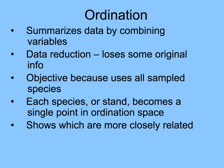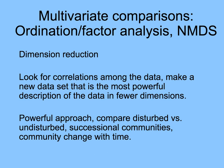Ordination shows which communities are most similar to each other. There are other multivariate comparisons as well — ordination is sometimes called factor analysis, and there's also non-metric multidimensional scaling, or NMDS. All of these are dimension reduction methods where you look for correlations among the data, making a new data set with axes that summarize a number of the variables, describing the data in fewer dimensions. You can use this approach to compare disturbed versus undisturbed sites, different successional communities, or community change over time.